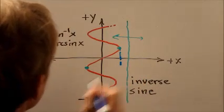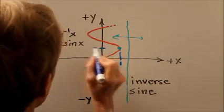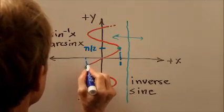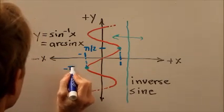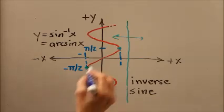Here the x value would be 1, the y value would be π over 2. Here the x value would be minus 1, and the y value would be minus π over 2. Now these are radian values here.